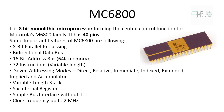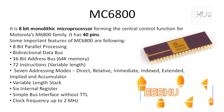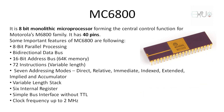The data bus of this microprocessor is bidirectional. The address bus is 16-bit, which supports 64K memory. It has 72 variable length instructions and seven addressing modes: direct, relative, immediate, index, extended, implied, and accumulator.